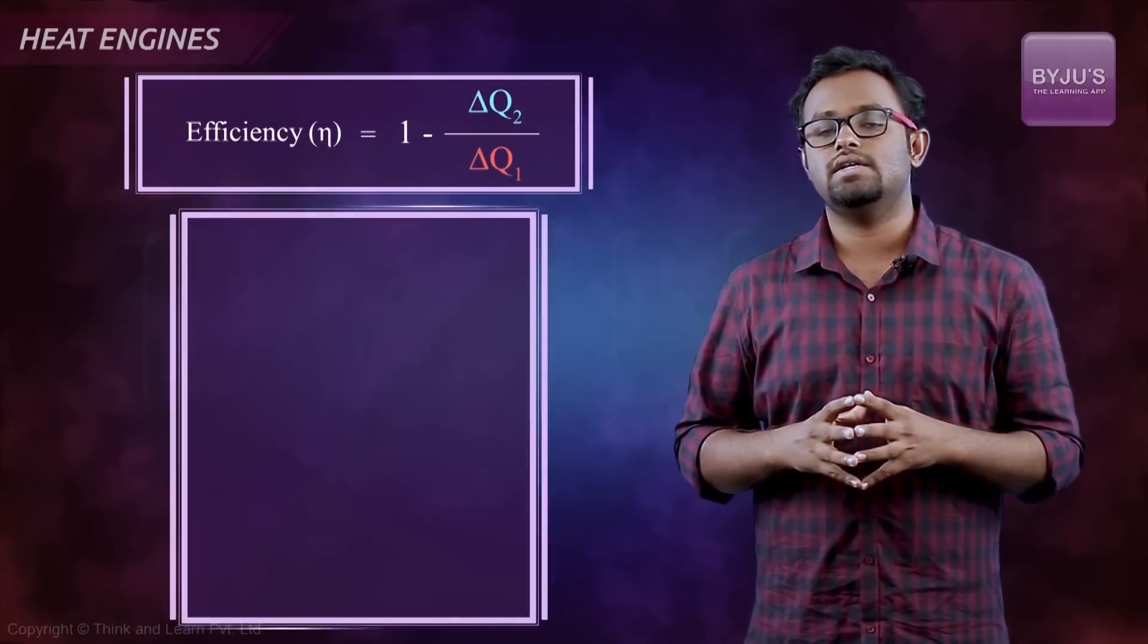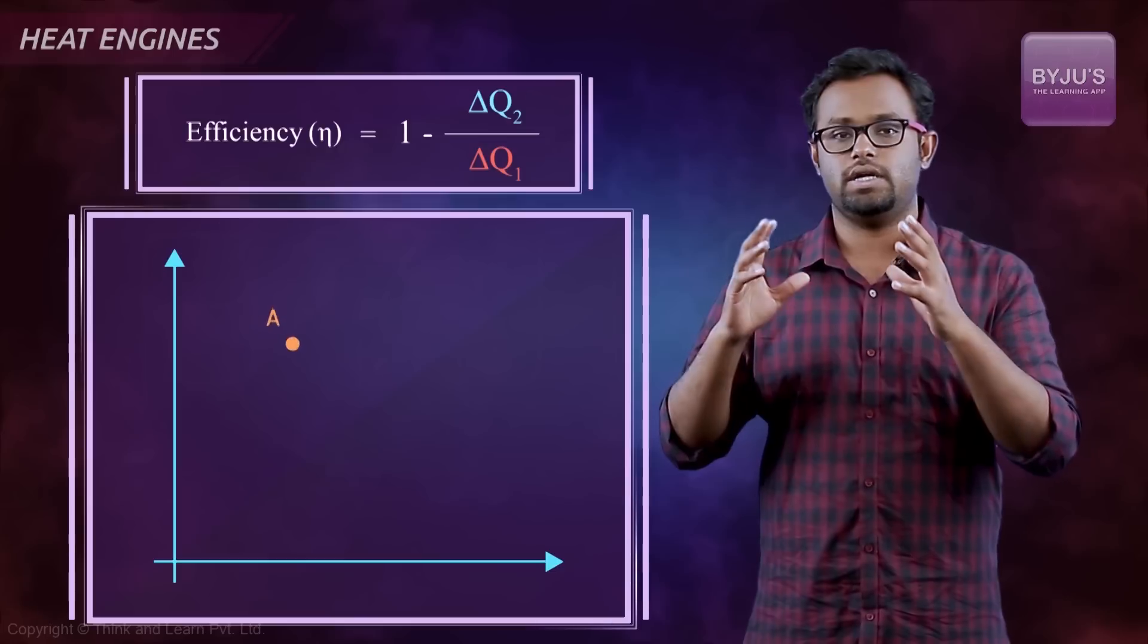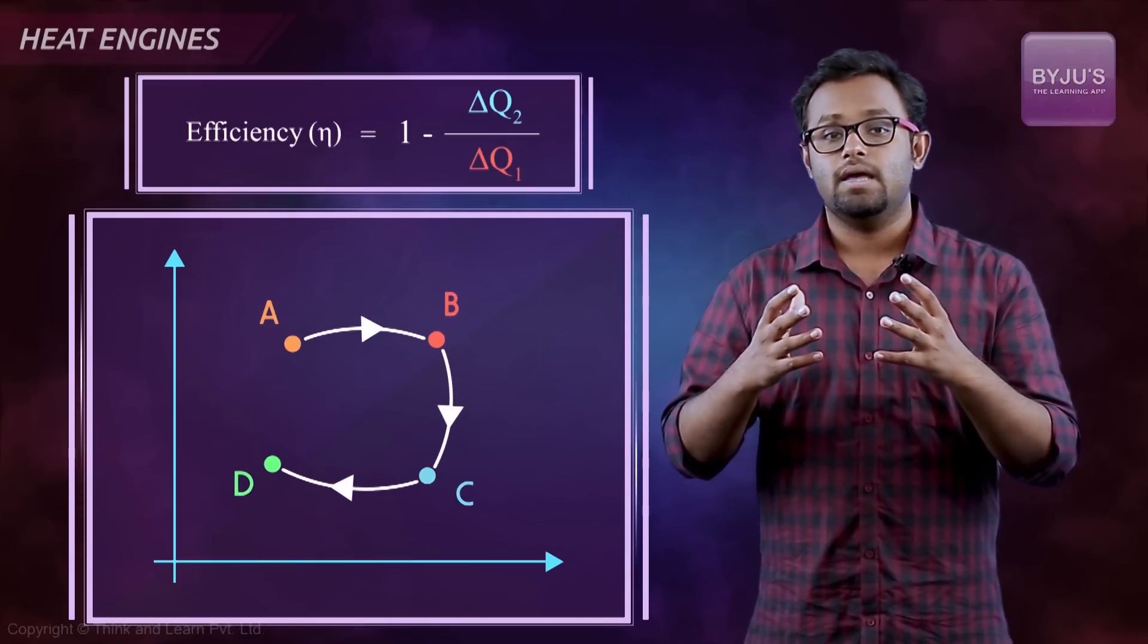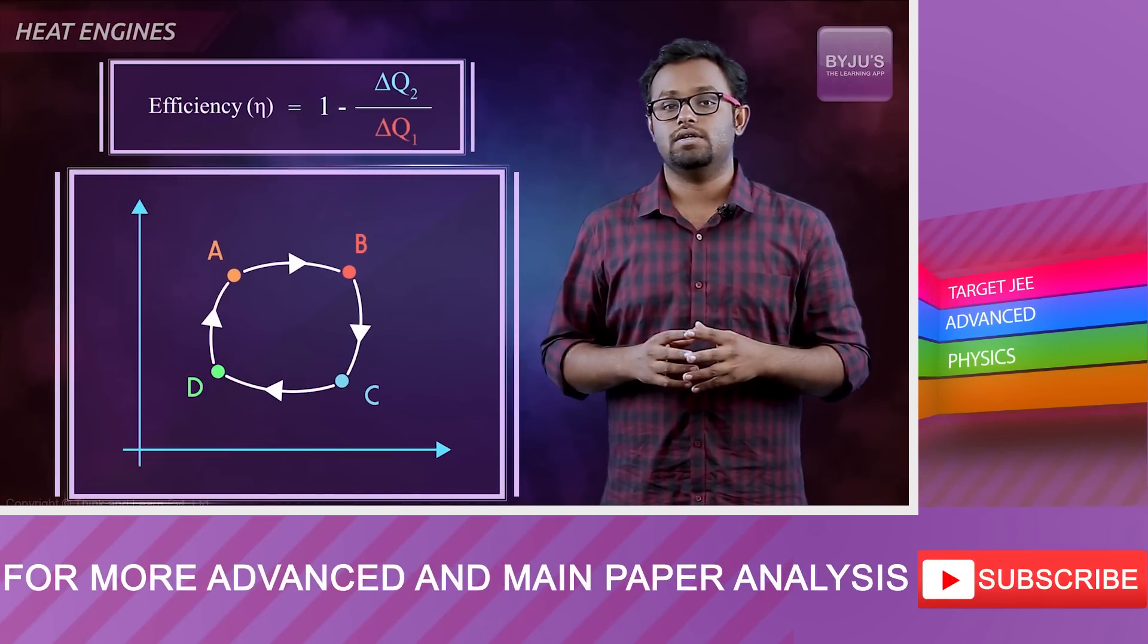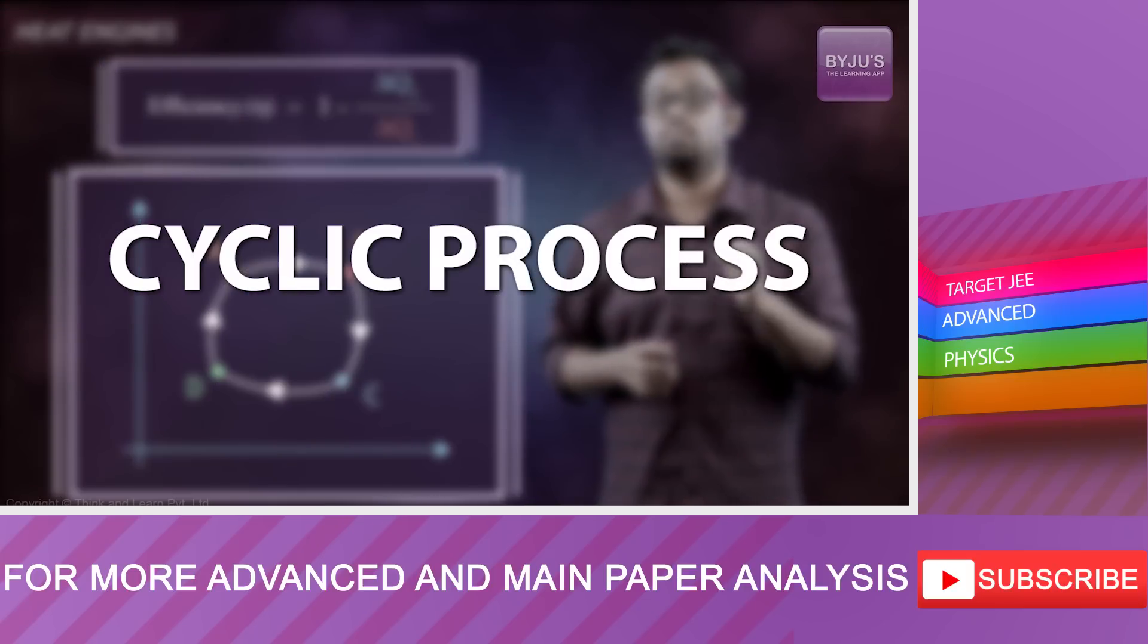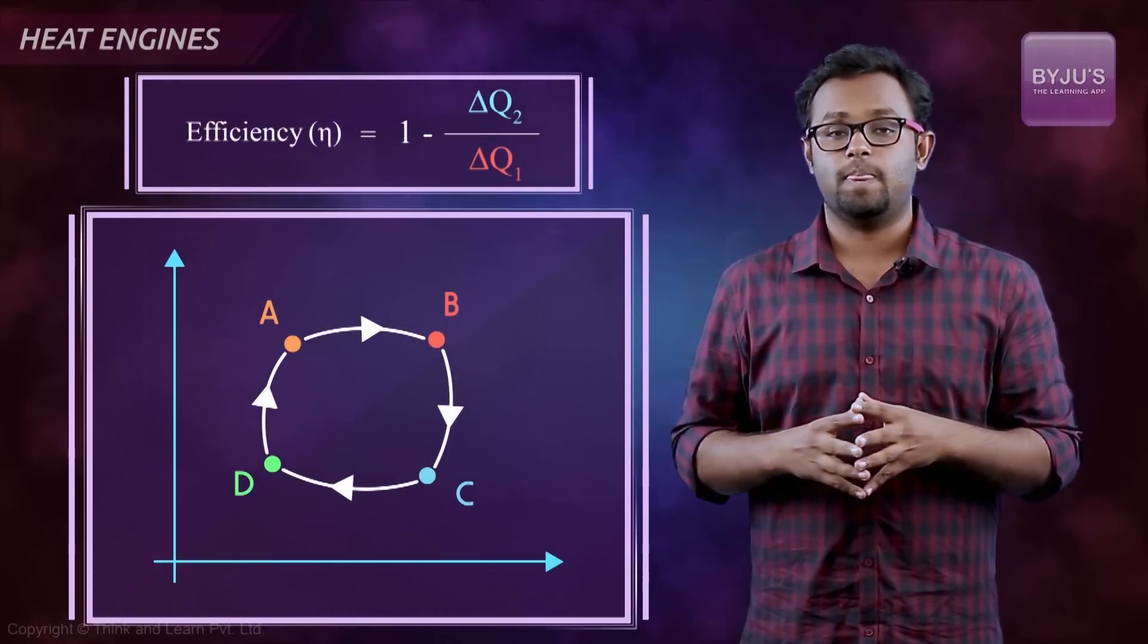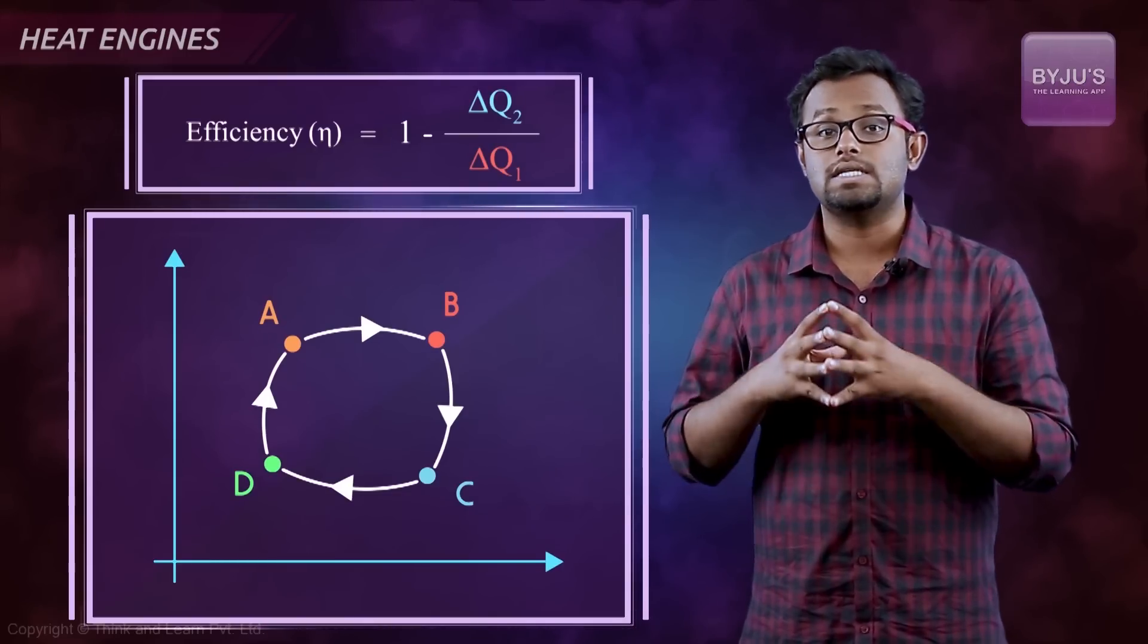The way we design this heat engine is such that the engine is at some state, let's say state A. From that state A, it goes to some other state B, and from that state to state C, then D. But in the end, it comes back to the same state A. Any process which comes back to the original state from where it had started is called a cyclic process. Heat engine process is a cyclic process, and that's because we want the engine to keep on going, to keep on repeating itself. For that, the whole process should be a cyclic process.